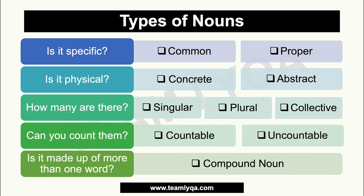I made a makeshift checklist or card so we can see which categories fit a given word. Don't worry, we'll explain them one by one. But basically, there are five questions that will help you determine if the noun is common or proper, concrete or abstract, singular or plural or collective, countable or uncountable, or if it's a compound noun.